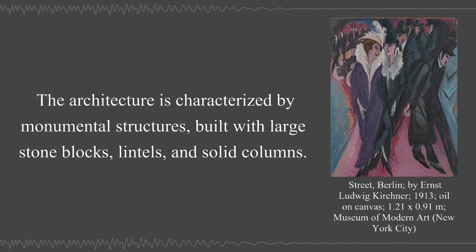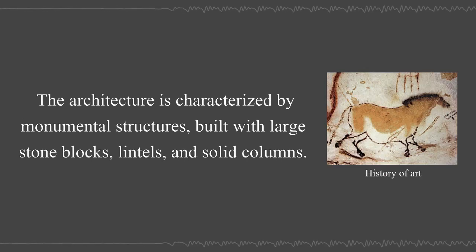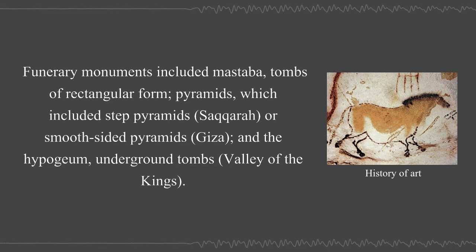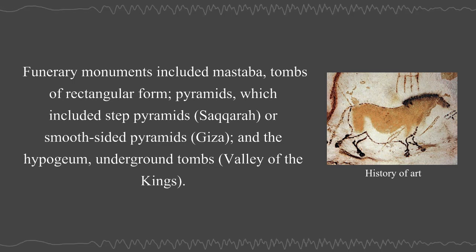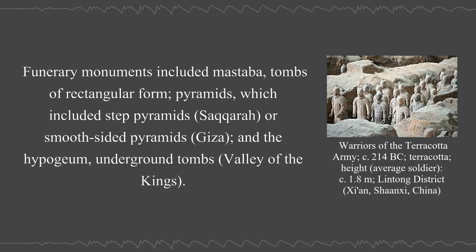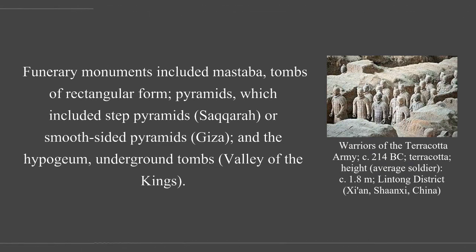The architecture is characterized by monumental structures built with large stone blocks, lintels, and solid columns. Funerary monuments included mastaba tombs of rectangular form, pyramids which included step pyramids at Saqqara or smooth-sided pyramids at Giza, and the hypogeum underground tombs of the Valley of the Kings.